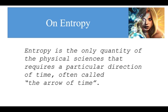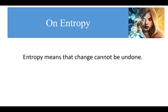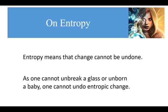With this information, I can now define entropy in terms of change. Entropy means that change cannot be undone. Entropic change is change that cannot be undone. As one cannot unbreak a glass or unborn a baby, one cannot undo entropic change. Entropic change is irreversible change. This definition is the only definition of entropy that can be applied to an open, closed system like nature.